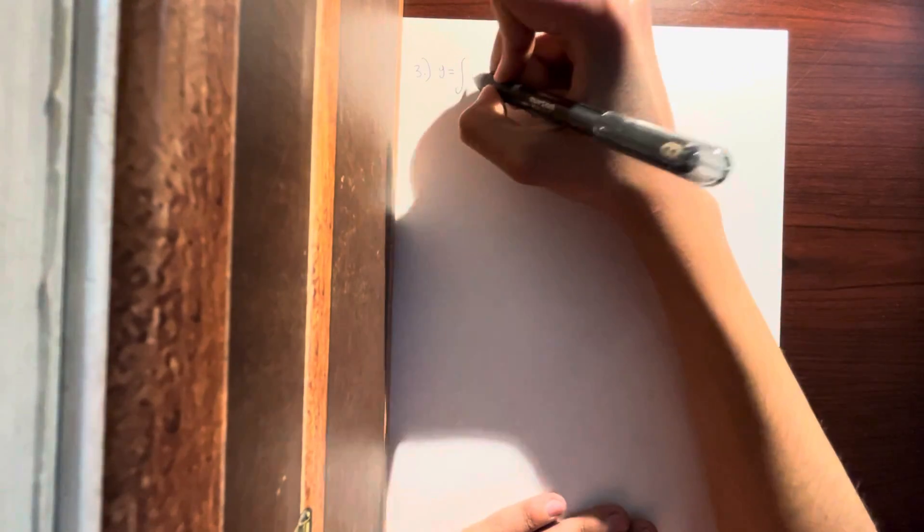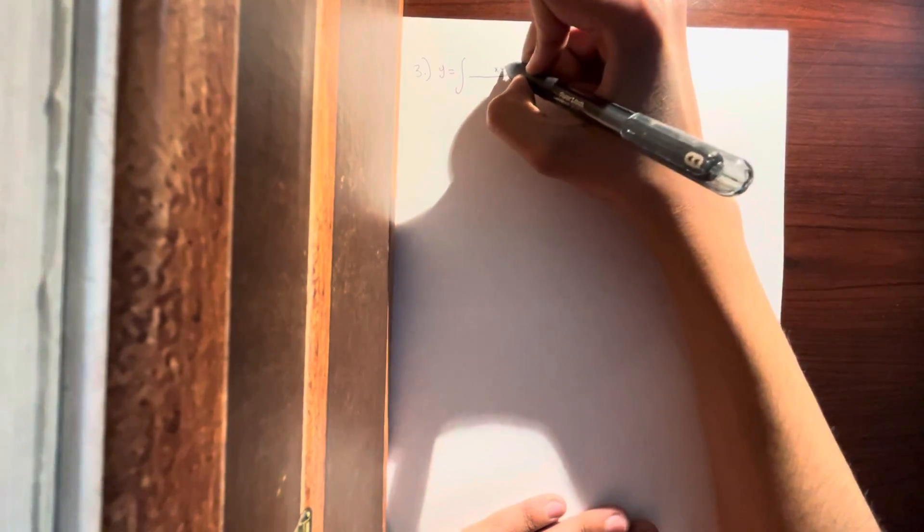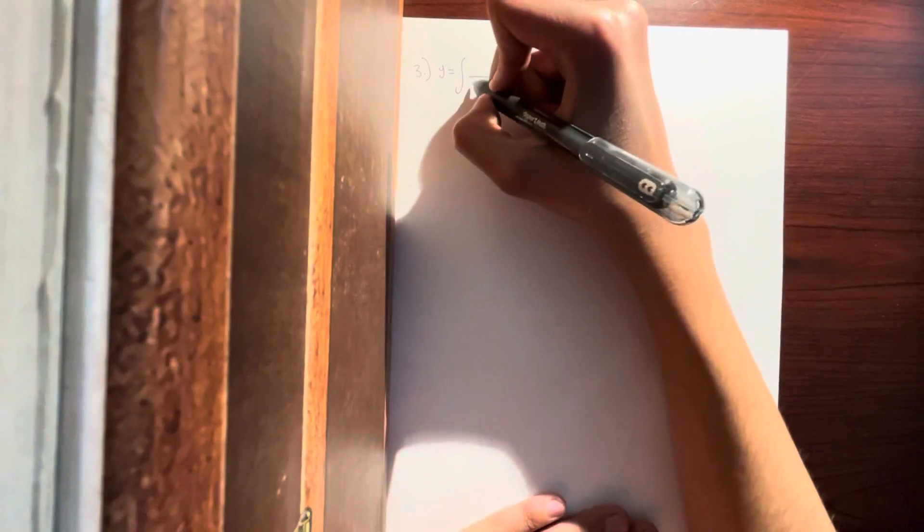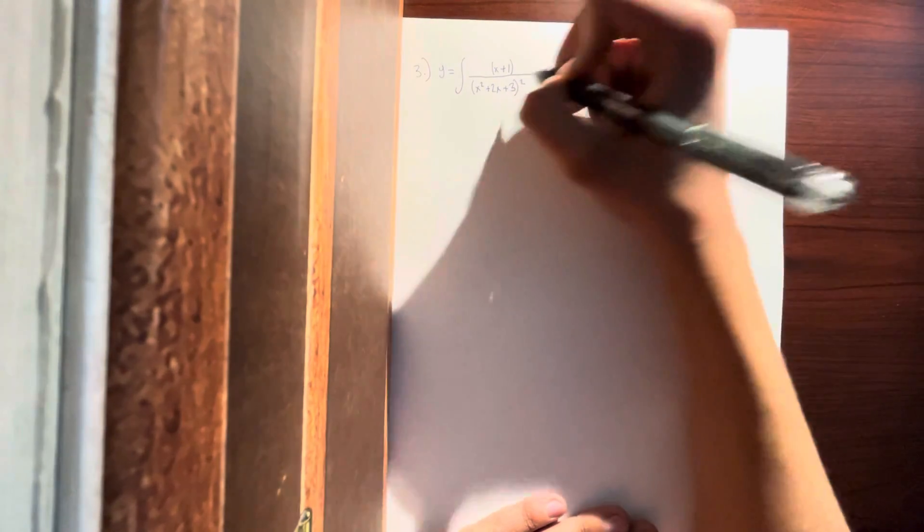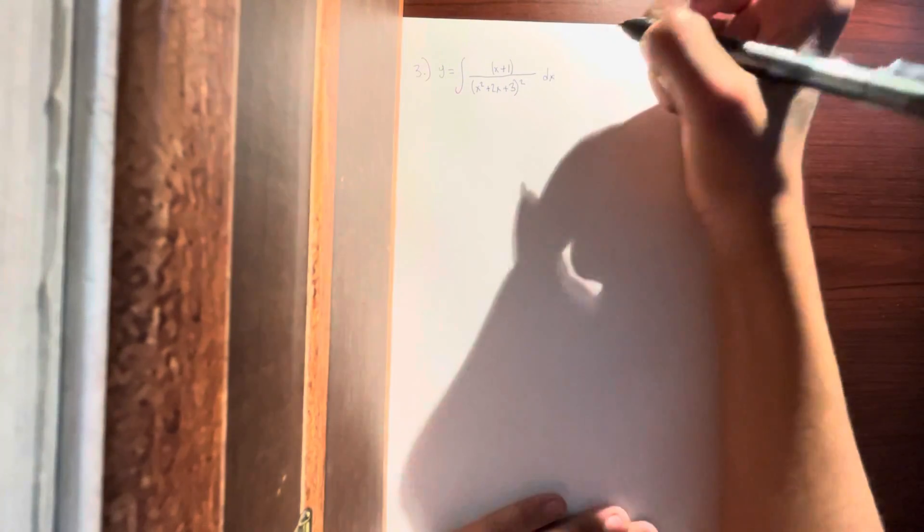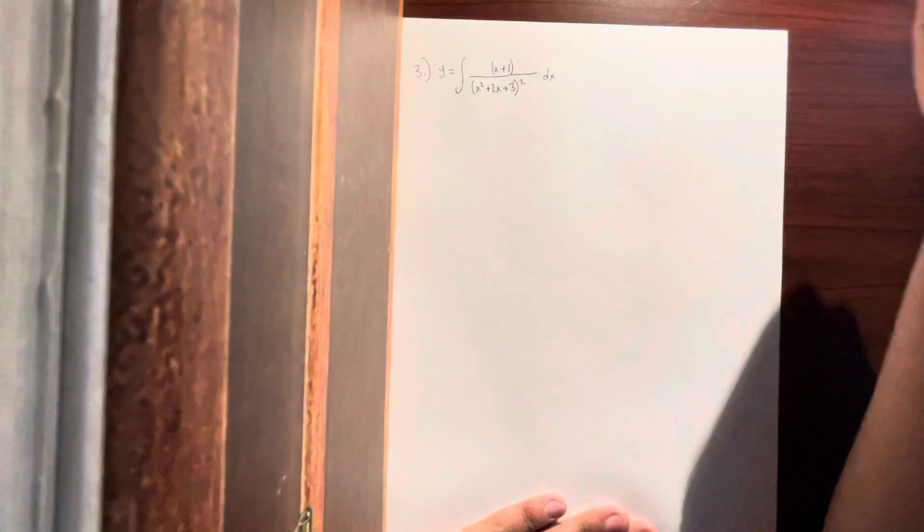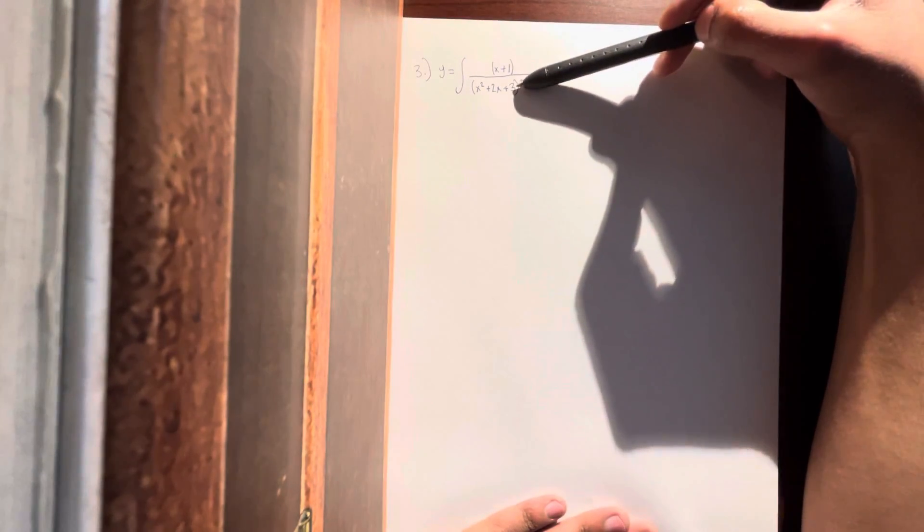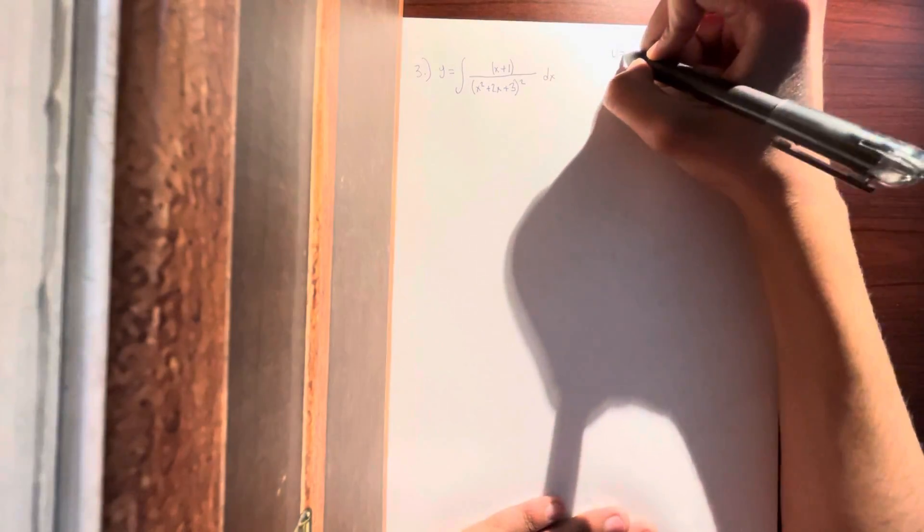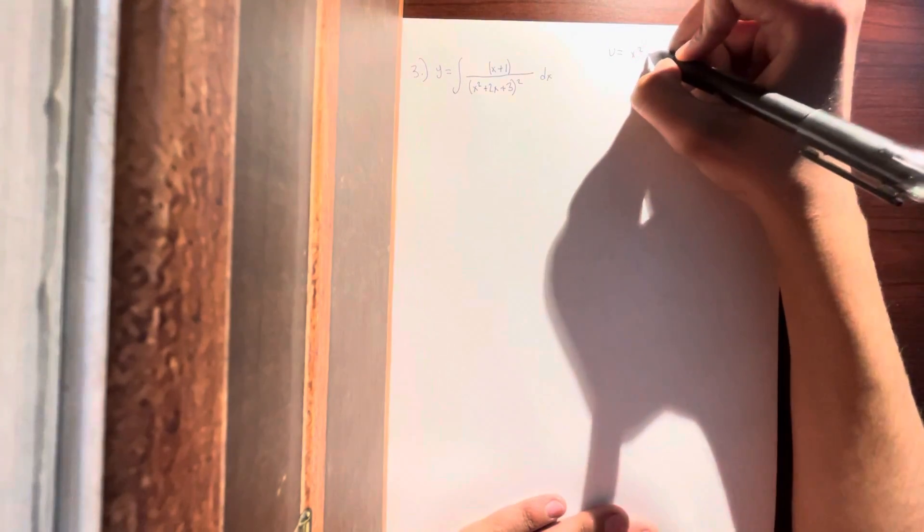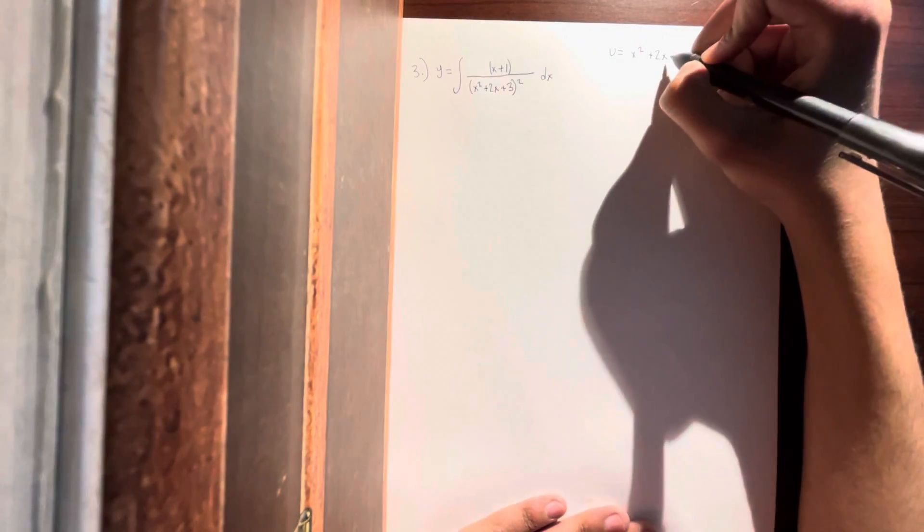And for this one we have y equals the integral of (x + 1)(x² + 2x + 3)² dx. So I believe the easiest one to substitute for u is x² + 2x + 3. So let's make it that. So u = x² + 2x + 3.